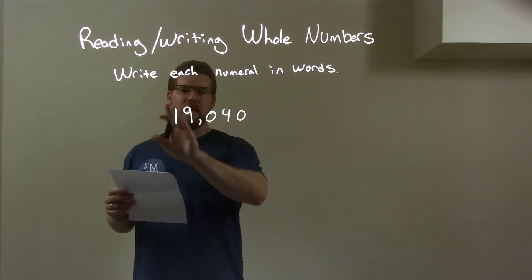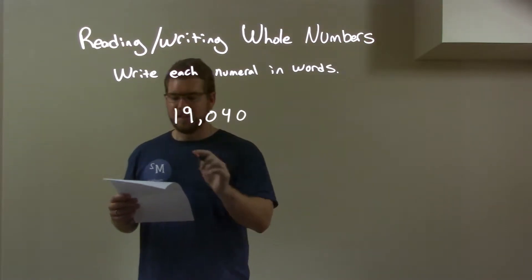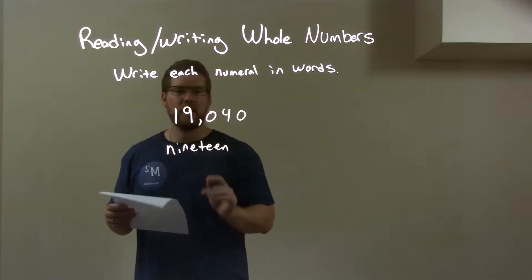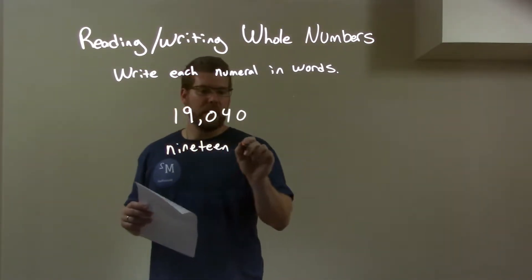The first thing I look at here is that one nine, that's nineteen, right? So we have nineteen. But this is in the thousandth section, so we have nineteen thousand.